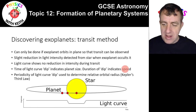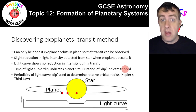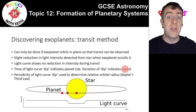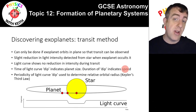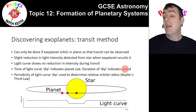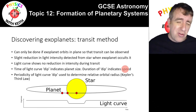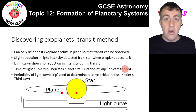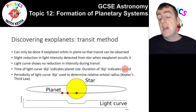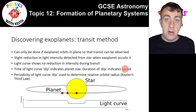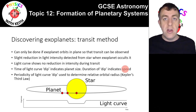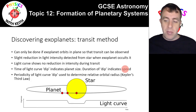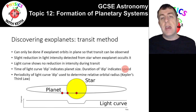How do we find planets? Mercury, Venus, Earth, Mars, Jupiter, and Saturn are easy to see with the naked eye. Uranus and Neptune were much trickier — we had to predict their positions based on gravitational interactions and deviations in Saturn's orbit, then looked and found them. But that's all within our solar system. Exoplanets are planets that orbit other stars, and we can find them in several different ways — which we're going to look at now.